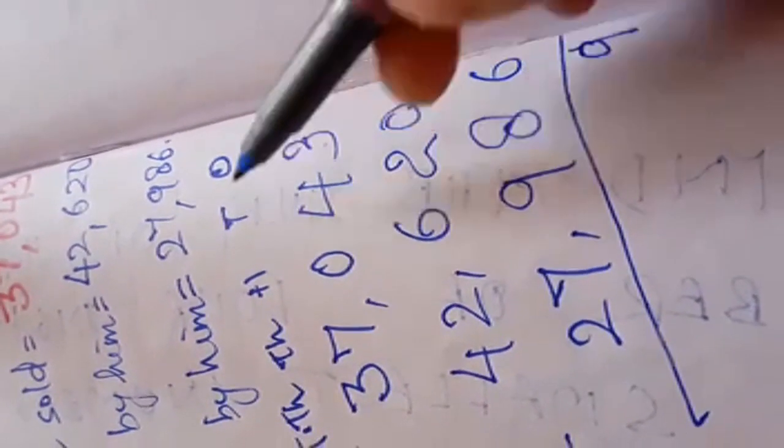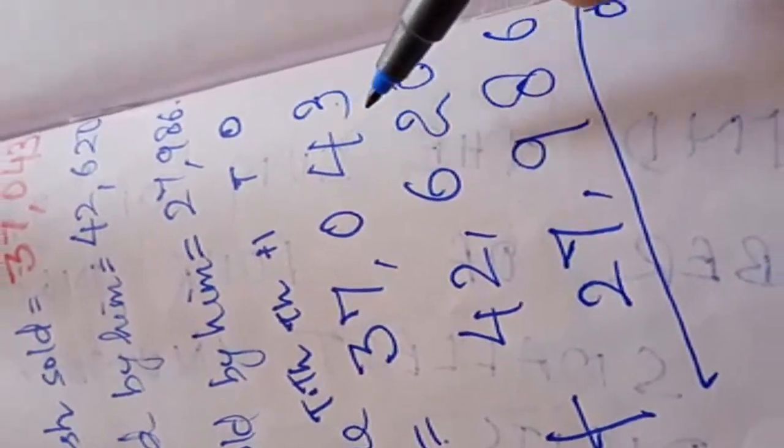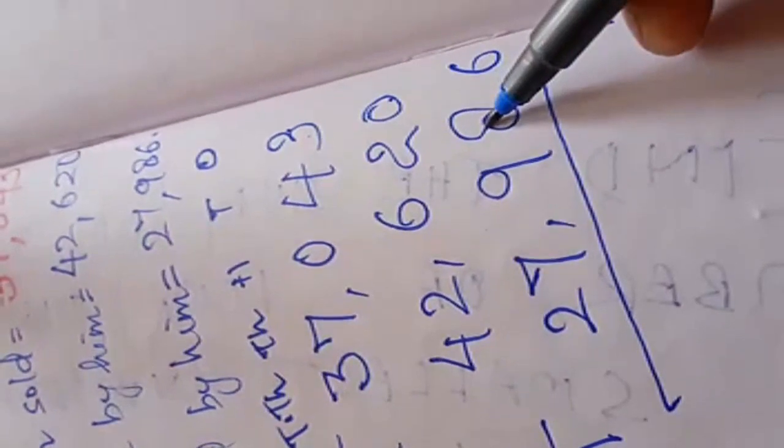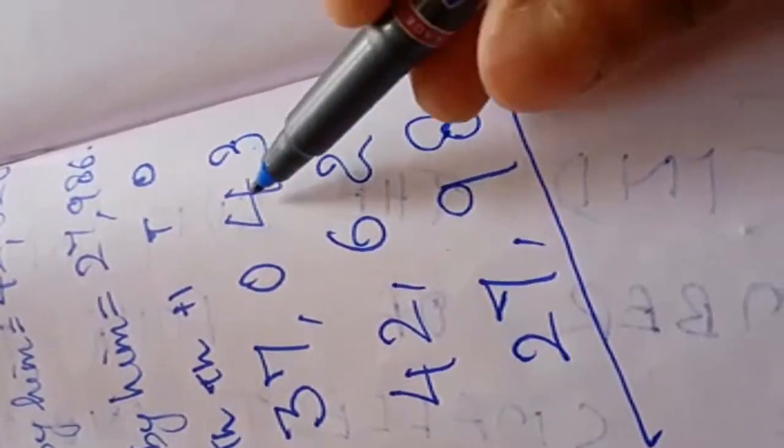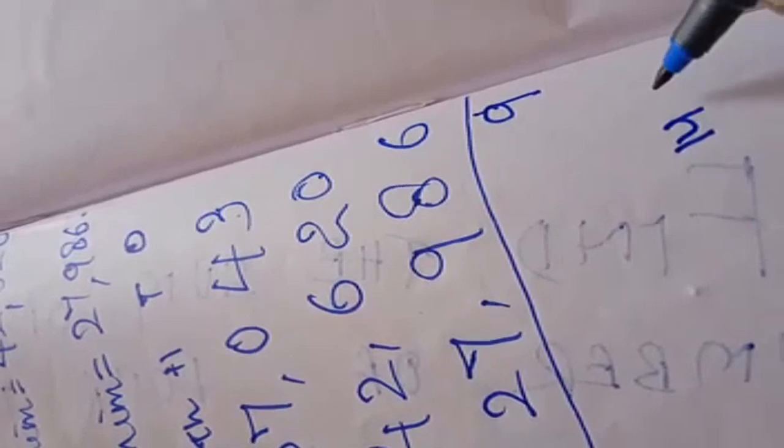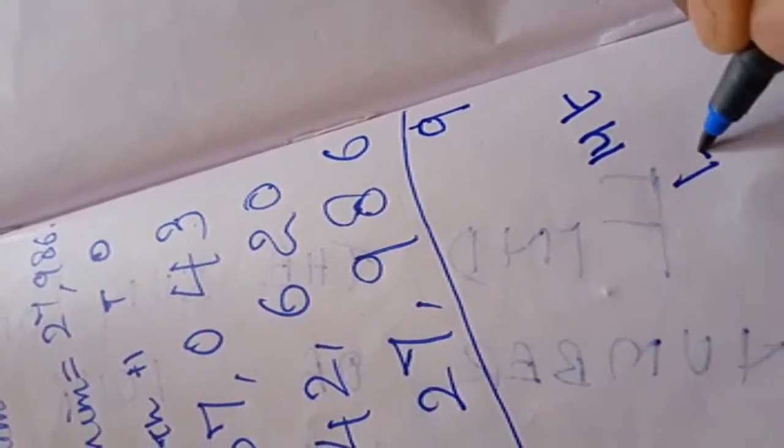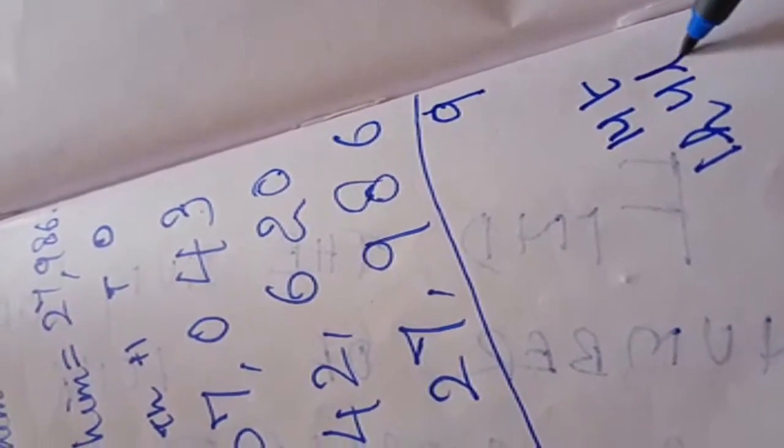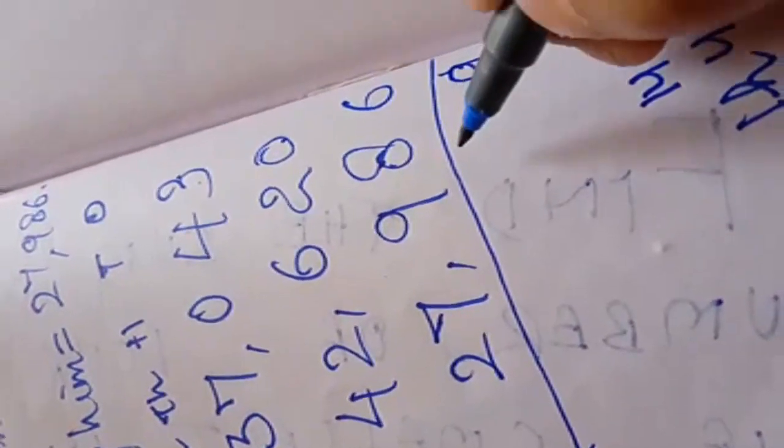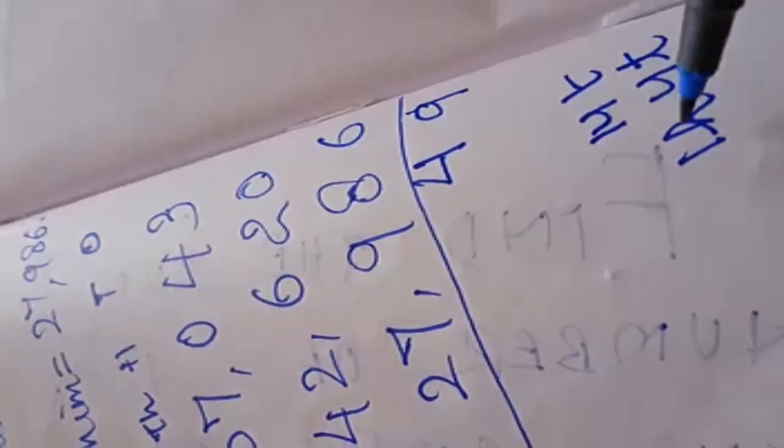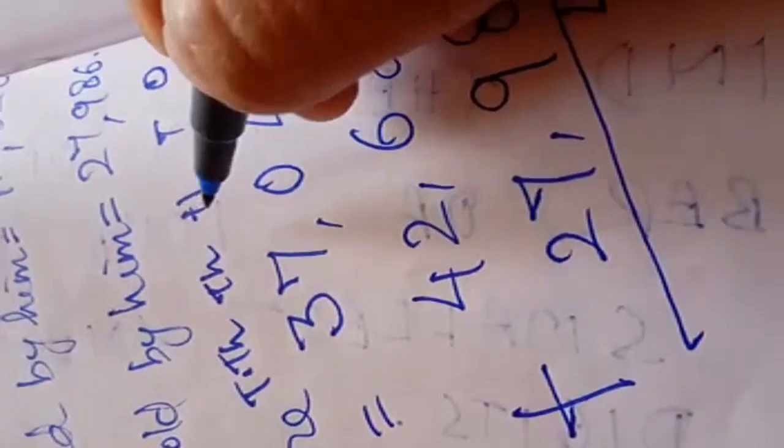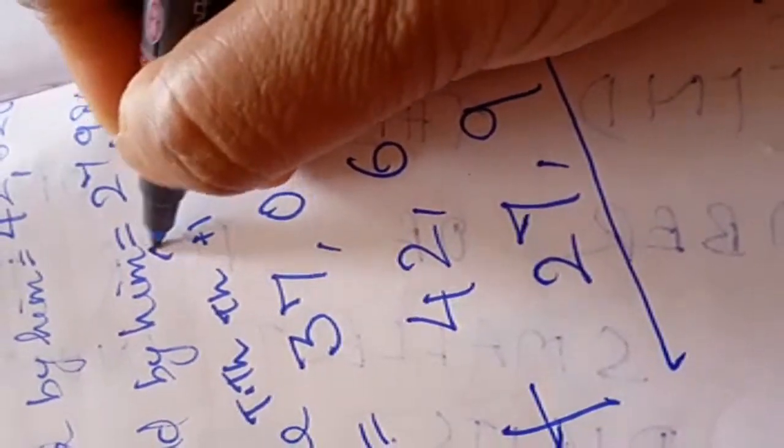Now, come to adding the tens. 4 tens plus 2 tens plus 8 tens, 8 plus 2 plus 4 is 14. So, 14 tens means it has 100 and 4 tens. 4 will go in the tens column and 100 will be taken as a carry over.